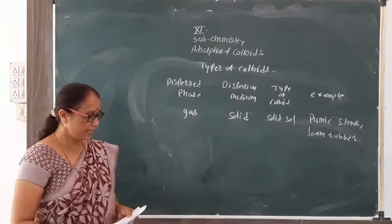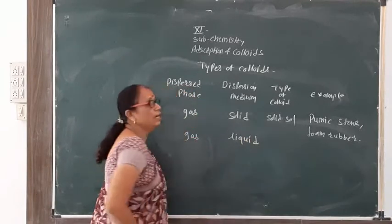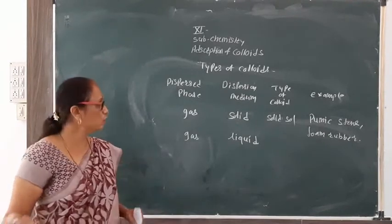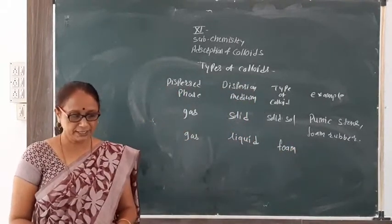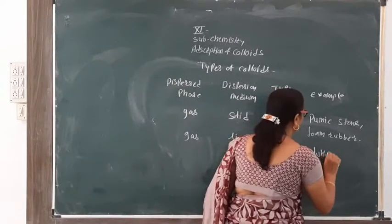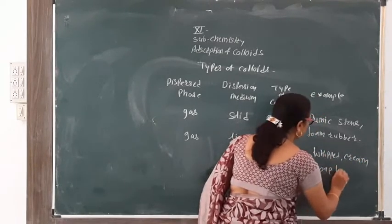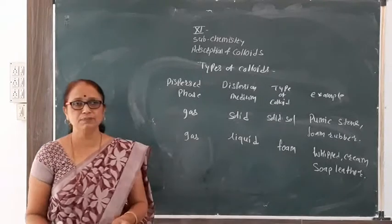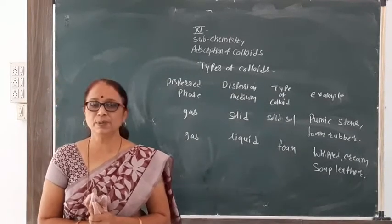The next type is gas-in-liquid. When the dispersed phase is gas and the dispersion medium is liquid, this colloid is called foam. An example is whipped cream. Note that gas-in-gas is not a colloidal solution. There are eight types of colloidal solutions depending on the phases of the dispersed phase and dispersion medium.